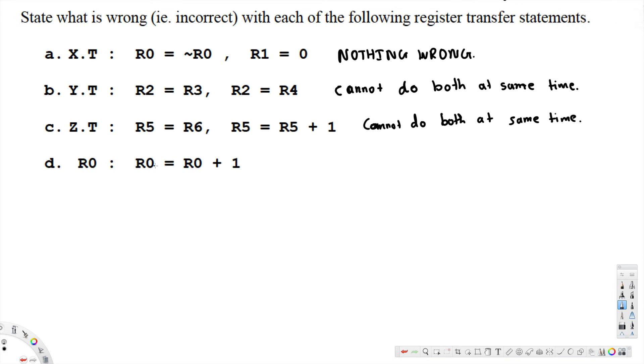Now here, let's look at the D part: R0 is equal to R0 plus 1. It can be done, so nothing wrong, nothing wrong.